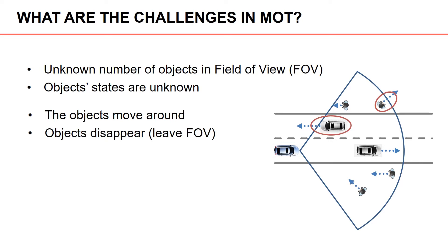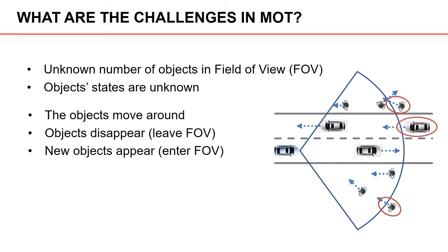Because the objects move, some of them disappear from the field of view — they leave the field of view. In this example we've highlighted with a red ellipsis one of the cars and one of the pedestrians that are about to leave the field of view. Of course, objects might also appear in the field of view, meaning that they enter it. Here we have two pedestrians and one car that are about to enter the field of view. In target tracking literature, object appearance and disappearance is often referred to as object birth and object death respectively. So if you come across object birth and death in some tracking literature, you should know that it just refers to objects appearing and disappearing — it does not refer to any actual birth or death.